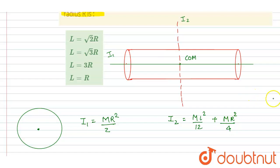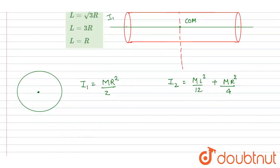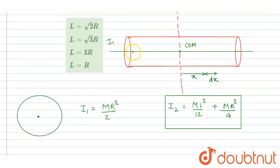If you don't remember this, you can derive it by integration. Take an element at a distance x with thickness dx. After integration with limits from -L/2 to +L/2, you'll get this I₂.